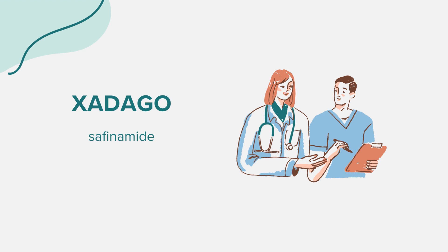Xadago is not suitable for individuals with severe liver disease. It's imperative to inform your doctor about all medications you're currently taking. Some medicines can lead to unwanted or even fatal effects if taken within 14 days before or after Xadago. Xadago should not be taken if you have an allergy to safinamide or if you have severe liver disease.